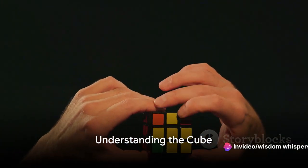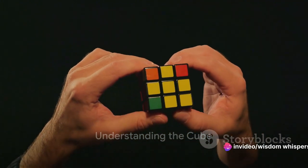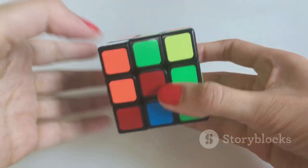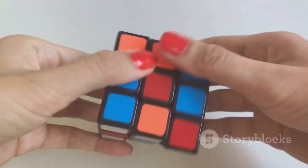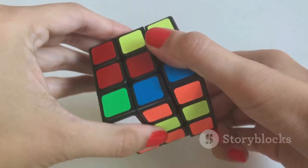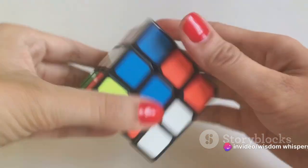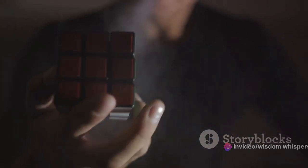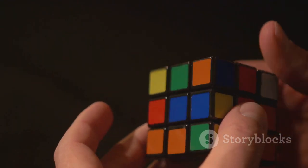Before diving into the solution, understand the basics of a Rubik's Cube. To truly master it, you need to familiarize yourself with its structure. At first glance it may seem like a chaotic mix of colors, but each piece and color has its role in the grand scheme of the cube. Let's break it down. The Rubik's Cube is composed of three types of pieces: the center, the edge, and the corner pieces.